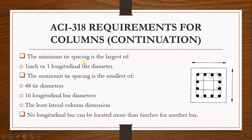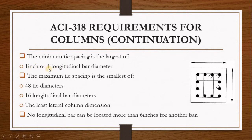The minimum tie spacing is the largest of two values: 1 inch or one longitudinal bar diameter. The largest of these two values is going to be the minimum tie spacing.